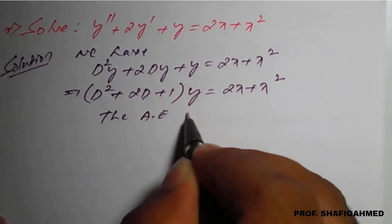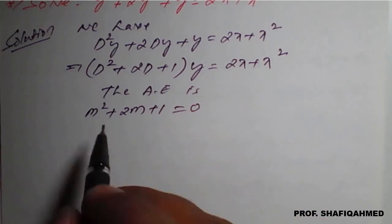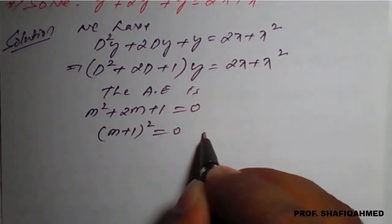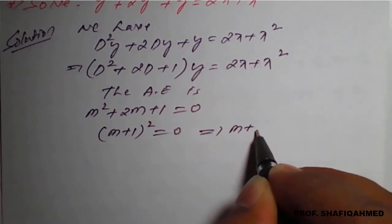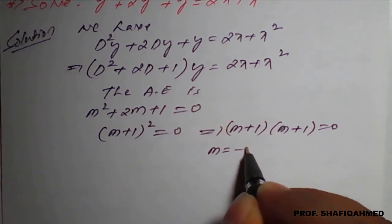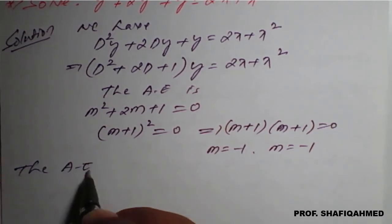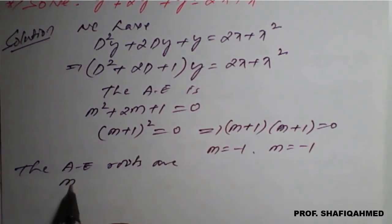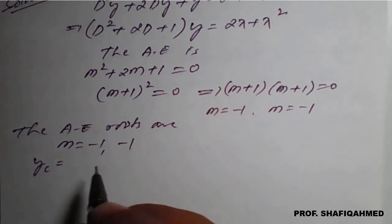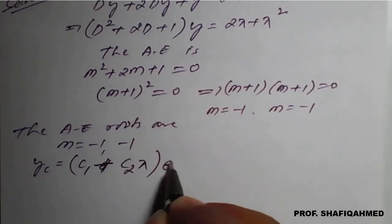Therefore, the auxiliary equation is m squared plus 2m plus 1 equals 0. This is of the form a squared plus 2ab plus b squared, which is m plus 1 whole square equals 0, implying m plus 1 repeated twice. So m equals minus 1, minus 1, which are real and repeated roots. Therefore, the complementary function is (c1 plus c2x) into e raised to minus x.